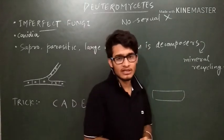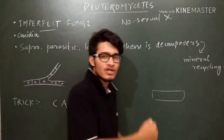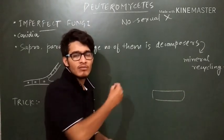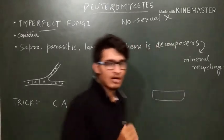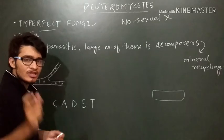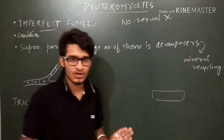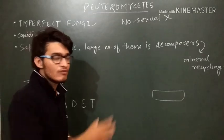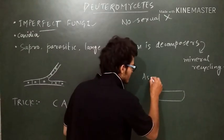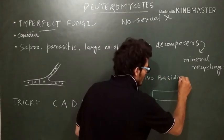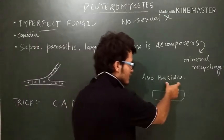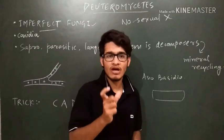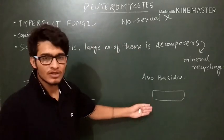This separate class can be Deuteromycetes. If some individuals found in Deuteromycetes are shown to have sexual reproduction, those organisms will be placed in other classes. In further studies, if we discover sexual phases, we can put those organisms into Ascomycetes or Basidiomycetes. And if members of Ascomycetes or Basidiomycetes are found showing only asexual reproduction, then we are going to place them in Deuteromycetes.